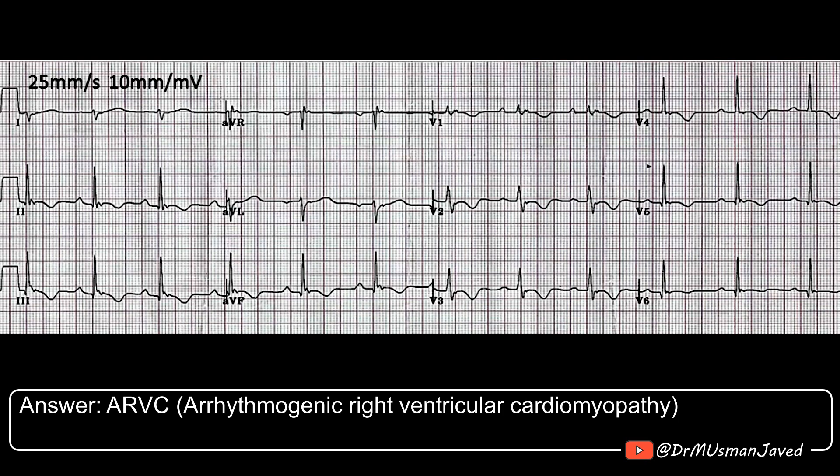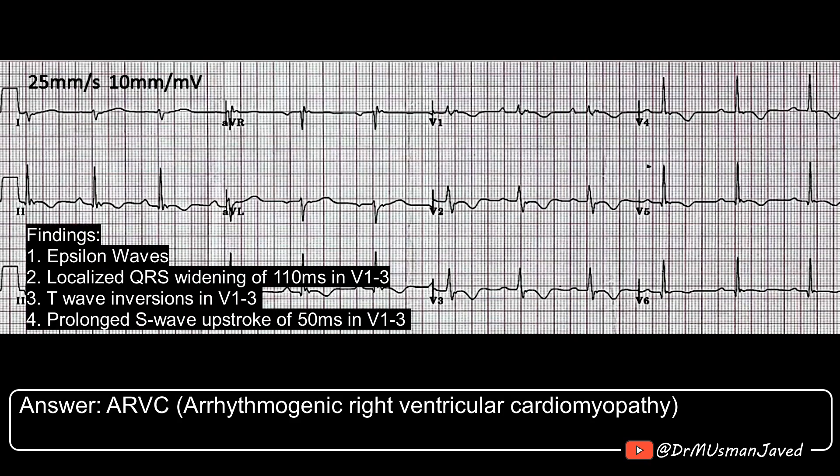This ECG is showing a normal sinus rhythm with upright P waves in the inferior leads. There is right axis deviation. An important finding is an epsilon wave — a little blip at the end of the QRS complex.